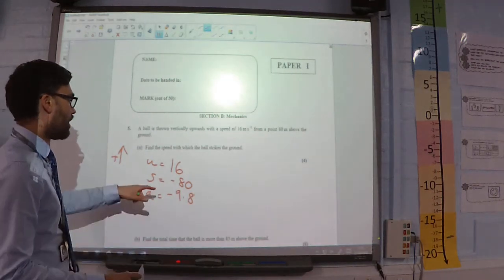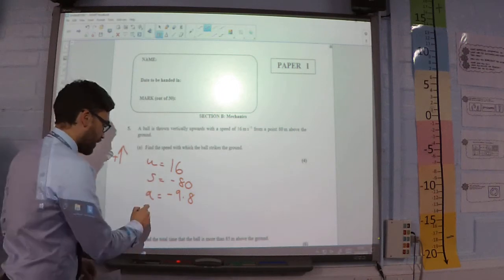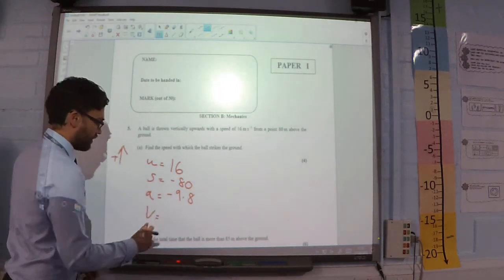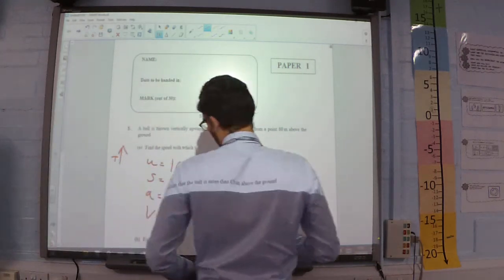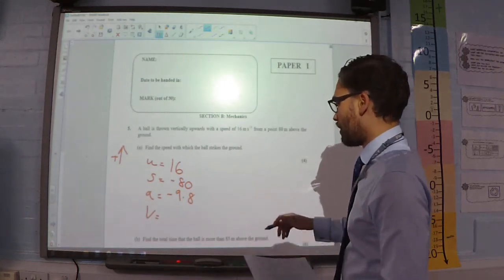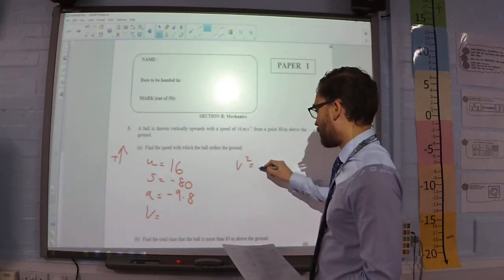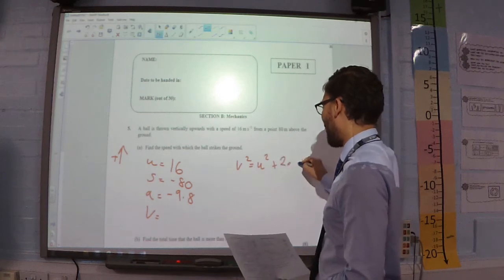I'm trying to find that final velocity. So, the one that I'm going to use is v squared equals u squared plus 2as.